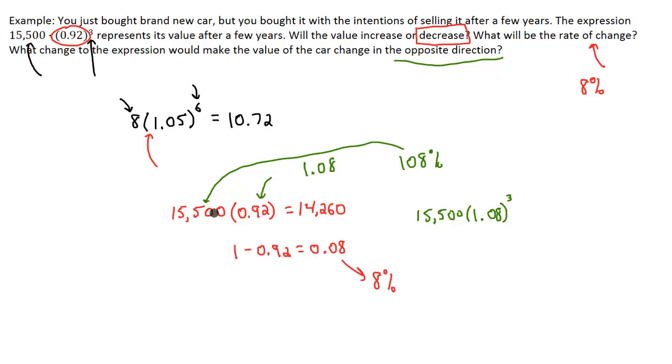The beginning number is your initial value. That base number is going to be the rate of change, or it's going to show you what that rate of change is. If it's higher than 1, it's going to be increasing. If it's less than 1, it's decreasing. And then the exponent would represent time.